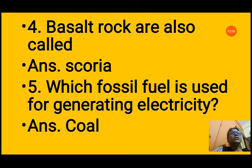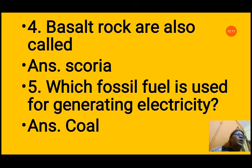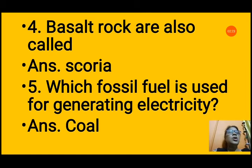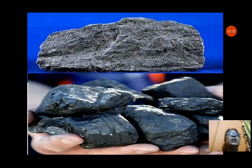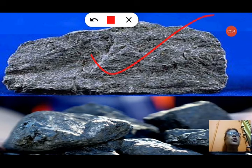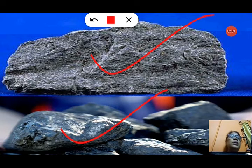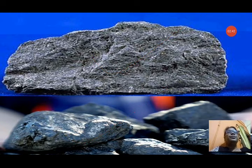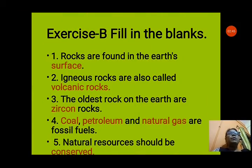Question 5: Which fossil fuel is used for generating electricity? Options: A. kerosene, B. petroleum, C. natural gas, D. coal. The answer is coal. Coal is used in thermal power stations to generate electricity. You can see basalt rock also known as scoria, and coal shown here — coal is the fossil fuel used in thermal power stations.